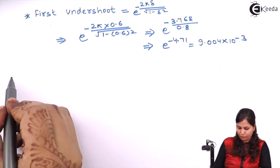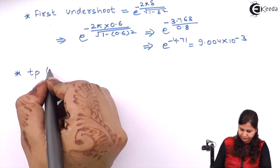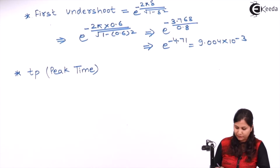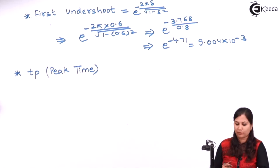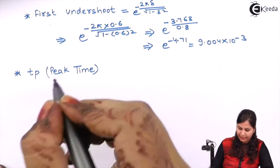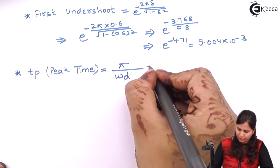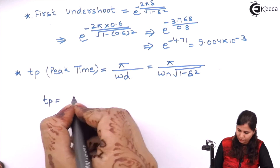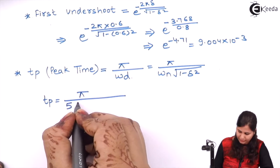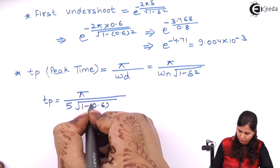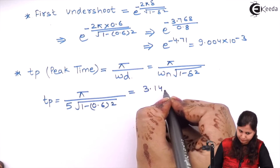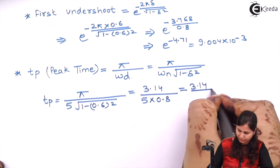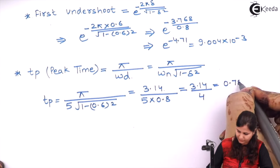The next specification is peak time, which is the time from the start until the first peak of the response occurs. Peak time is given by π / ωd, where ωd = ωn × √(1 − δ²). Substituting ωn = 5 and δ = 0.6: ωd = 5 × 0.8 = 4. So peak time = 3.14 / 4 = 0.785 seconds.